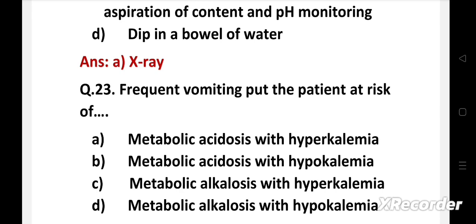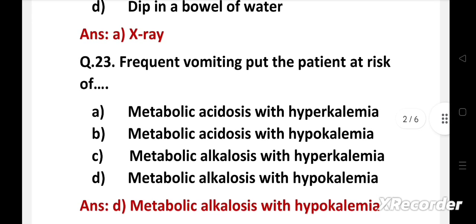Right answer is option D, metabolic alkalosis with hypokalemia. Excessive vomiting results in expulsion of gastric acid and potassium from gastric content, which leads to metabolic alkalosis and hypokalemia.